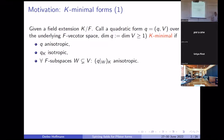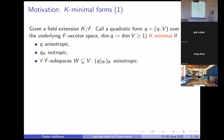These are basically: you're given a field extension, and then you consider an anisotropic form that becomes isotropic over the field extension. But you don't want any subform of this form to become isotropic over the field extension. So if you're restricted to a proper subspace, then this restriction, when lifted to the field extension, will not become isotropic. These forms I call minimal.